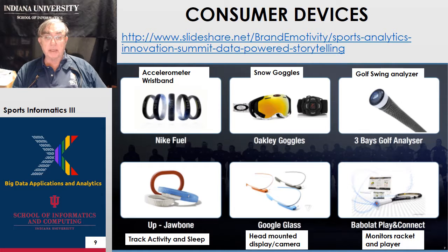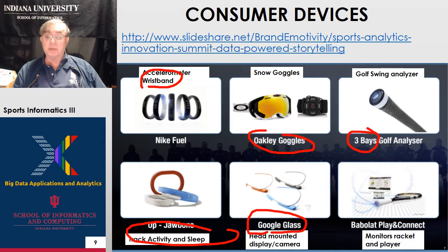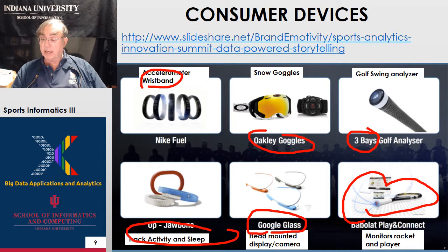Here are some pretty consumer devices. We have wristbands — the Nike Fuel accelerometers. We have Oakley snow goggles. We have a golf swing analyzer from Freebase. Here we have a tracker for activities from Jawbone. We have Google Glass, which is typically used for the person to track what's going on in the outside world and have a richer interaction. And here we have from Avalet some digitally enhanced rackets for playing various ball games like racquetball.